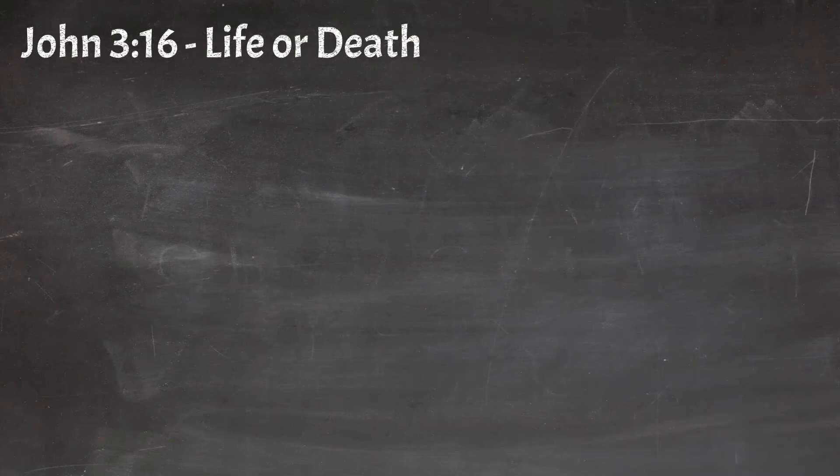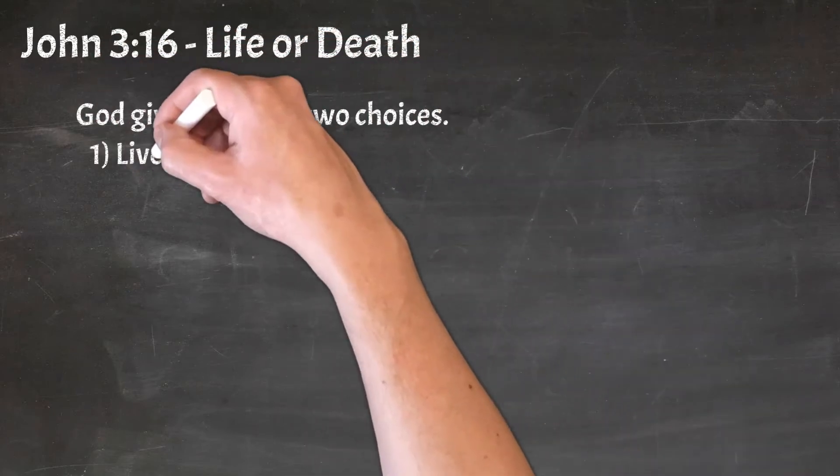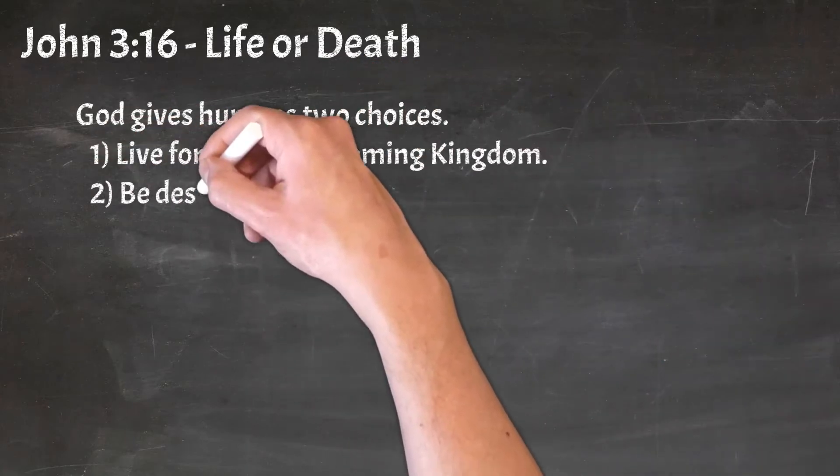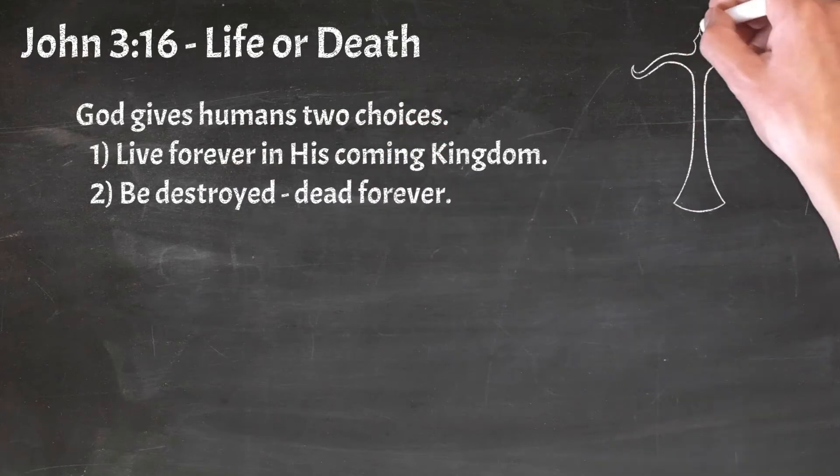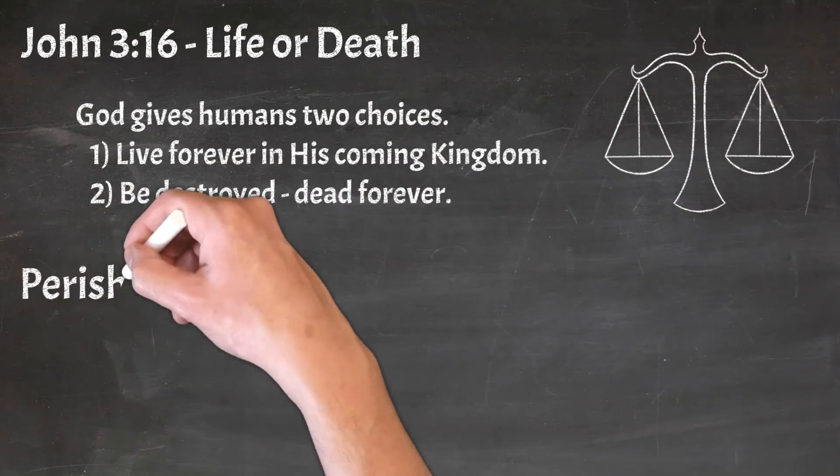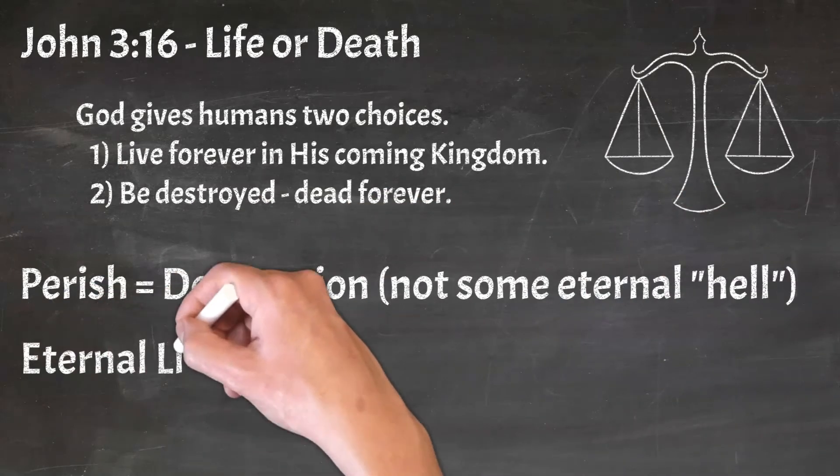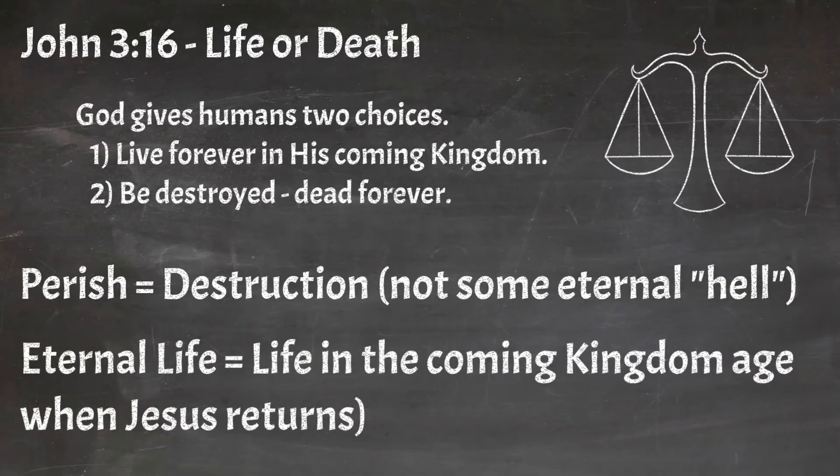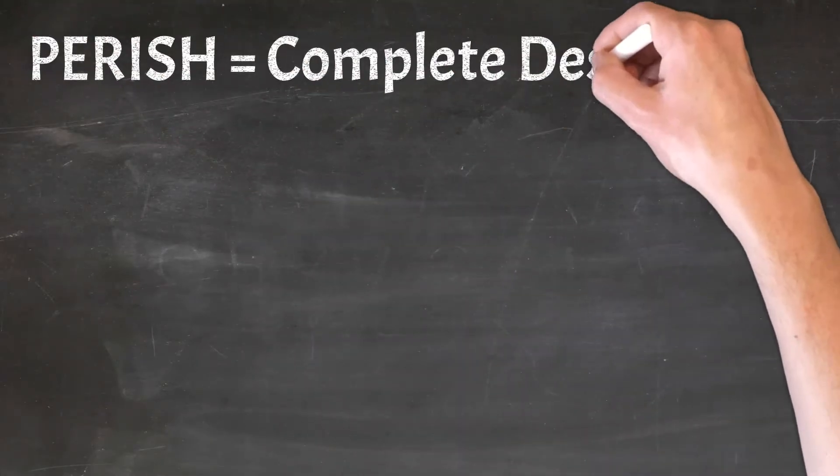John 3:16 on life or death. God gives humans two choices. You can either live forever in his coming kingdom, or you can be destroyed. That means dead forever. Perish equals destruction, not some eternal hell that many churches teach. Eternal life is life in the coming age when Jesus returns. Perish means complete and utter destruction.